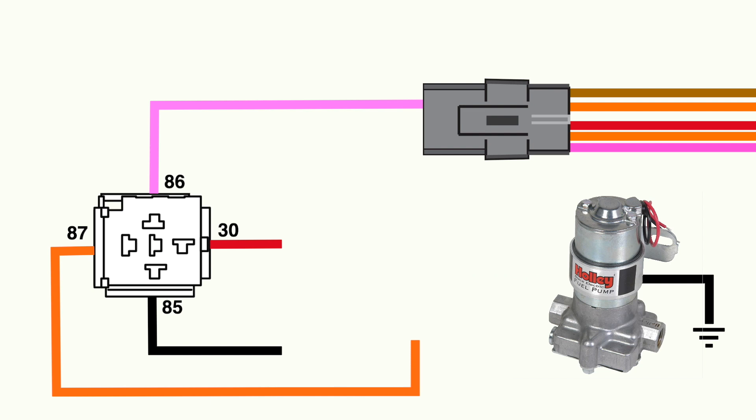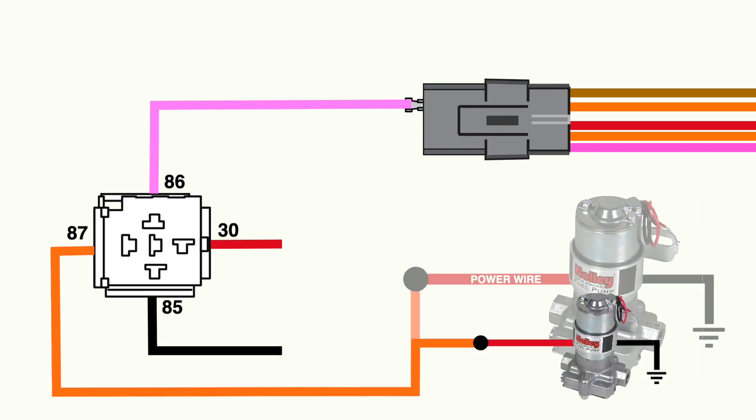Terminal 87 will supply power to the fuel pump. You'll want to be sure to match this to what's listed as the power wire in the fuel pump instructions, because color coding could change depending on the manufacturer.